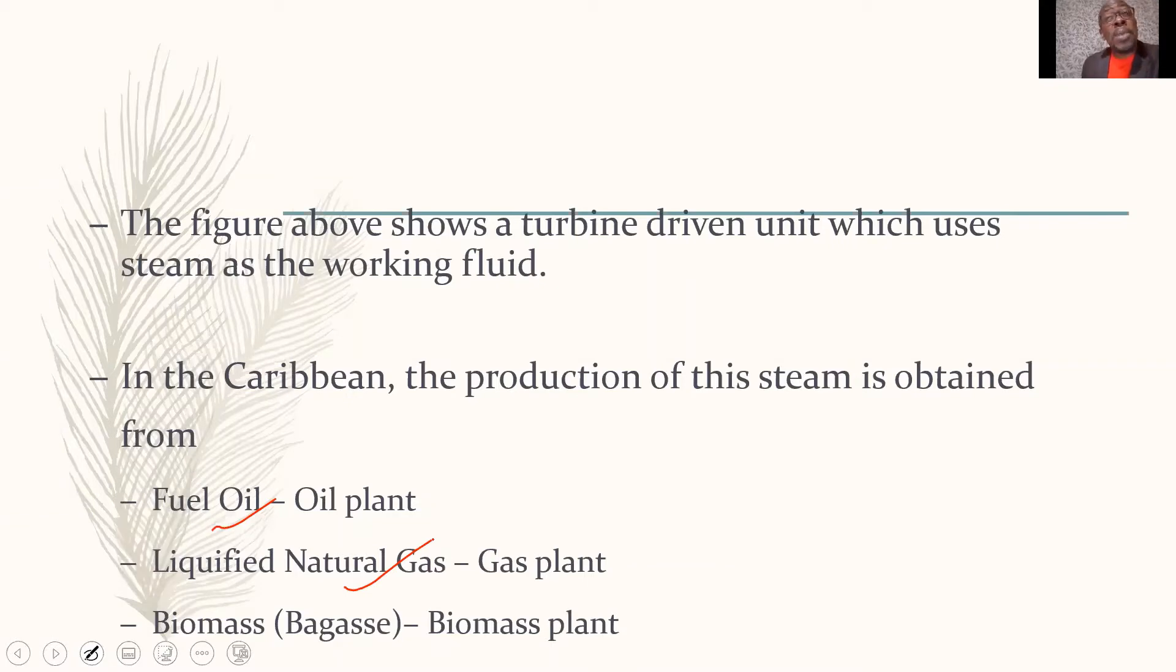Or, a biomass plant, where, especially in our sugar factories, we may be producing that steam using the waste from the cane. So, that becomes a biomass plant. And if we were using a nuclear plant, or if we're using nuclear to produce the heat, then we have a nuclear plant. And if we were using coal, then it's a coal plant.